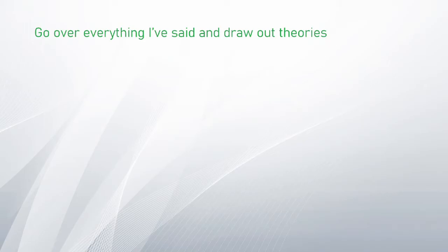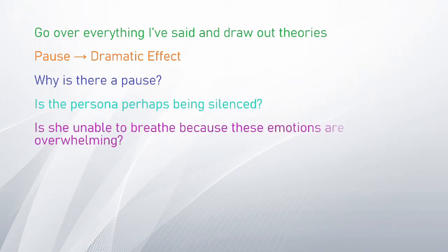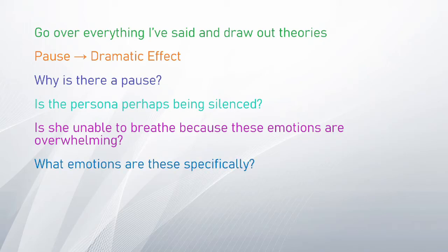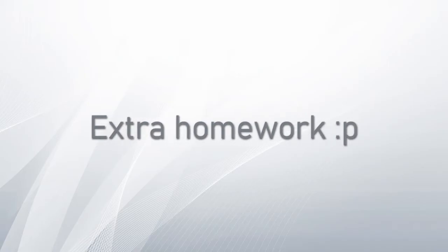What you need to do now is go over everything and try to draw out theories. For example, if I've said the pauses create dramatic effect, ask yourself why — is the persona perhaps being silenced? Is she unable to breathe because these emotions are overwhelming? What emotions are these specifically? Keep branching it out, like the concept of a web I discussed in my video on how to study literature. Don't stop branching out until you feel you have exhausted your mental capacity. I jotted down a couple of questions before analyzing — you may figure out the rest yourself, theorize and look for evidence supporting your theories.